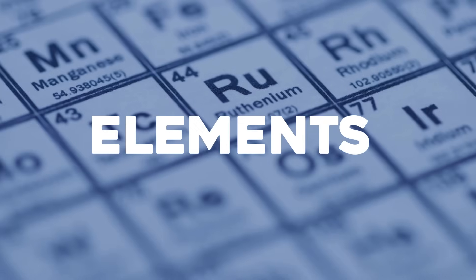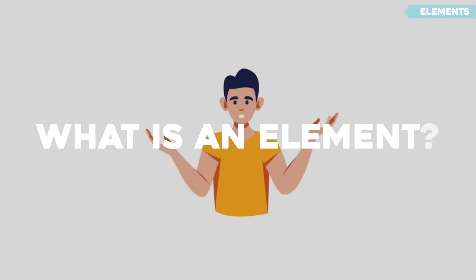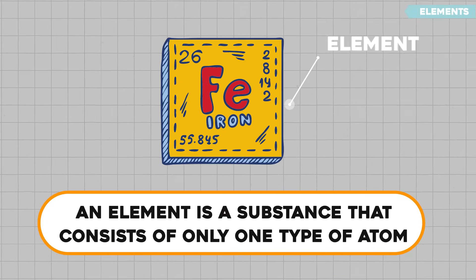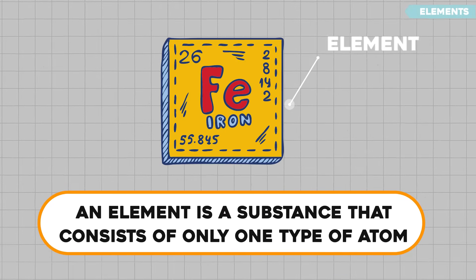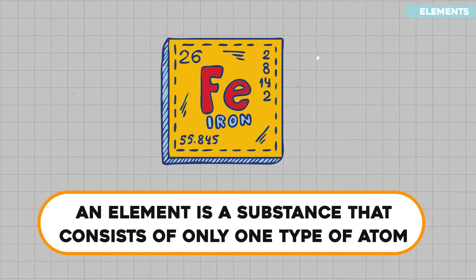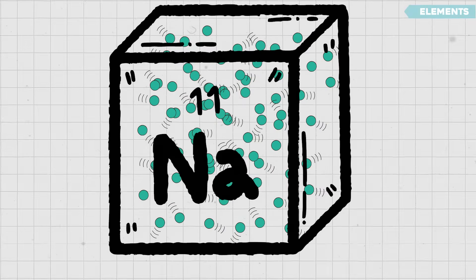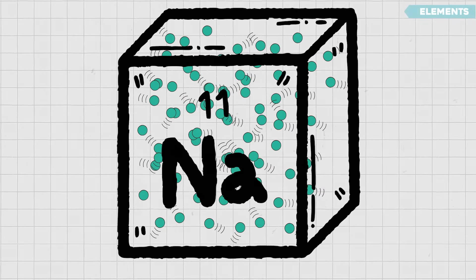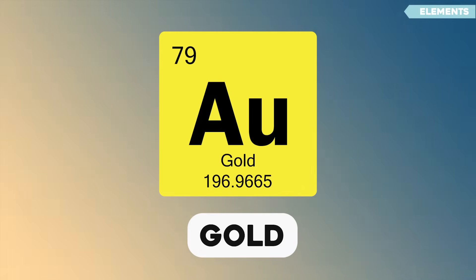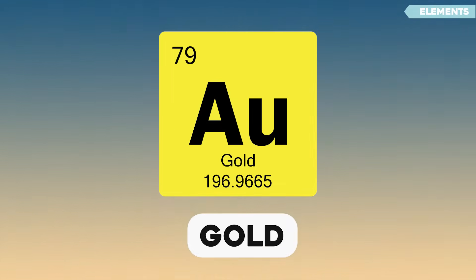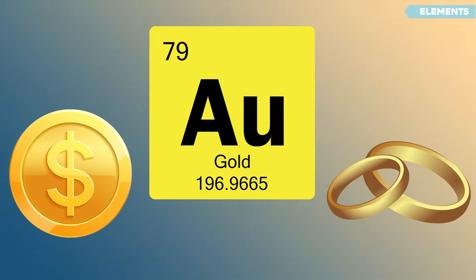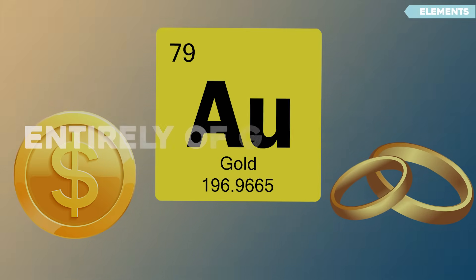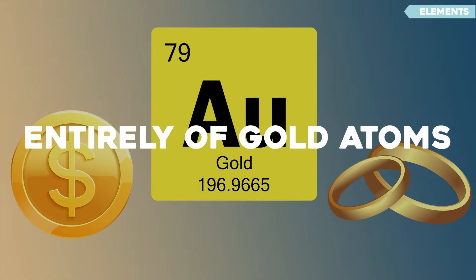Part 1: Elements. What is an element? An element is a substance that consists of only one type of atom. This means all the atoms in an element are the same. For example, gold is an element — whether it's a gold ring or a gold coin, it's made entirely of gold atoms.